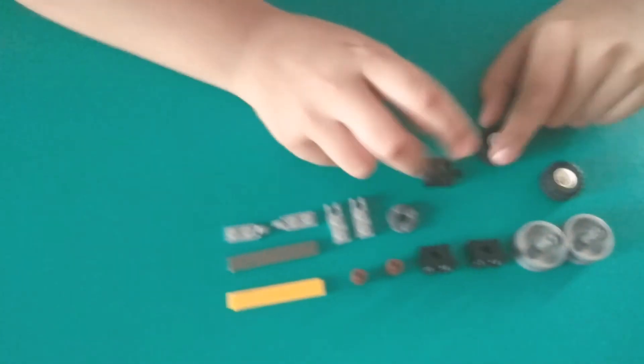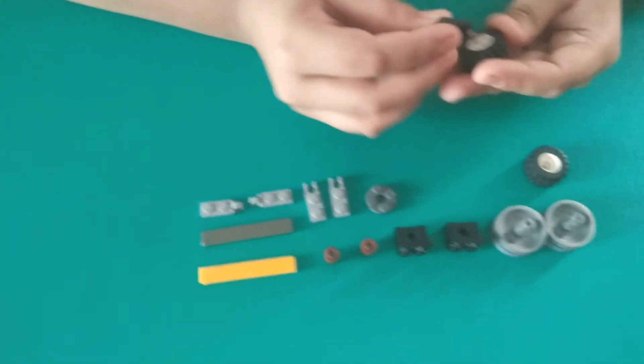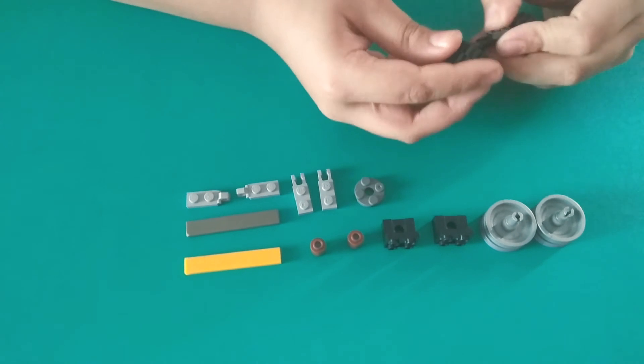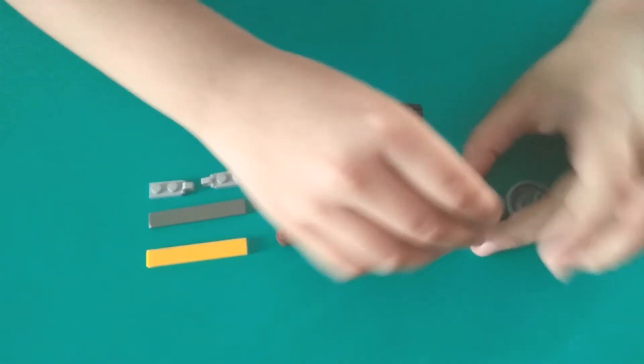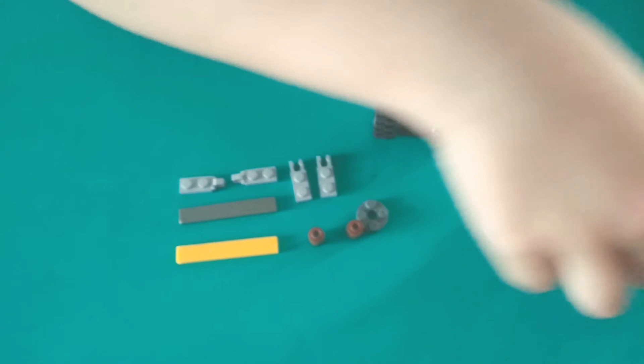So first take one double-sided wheel parts like this and put the wheels in. It is ready. Now take the special wheels and do like this.